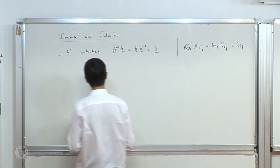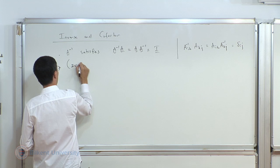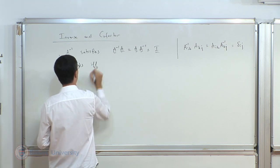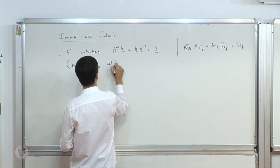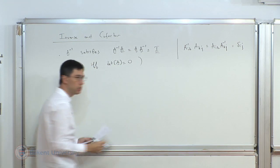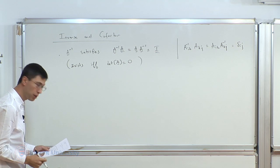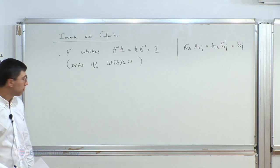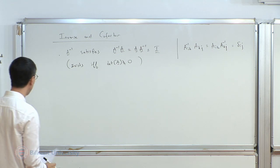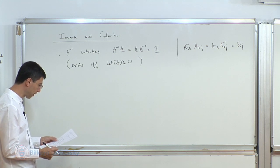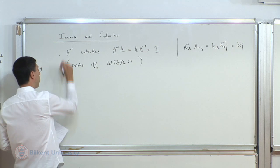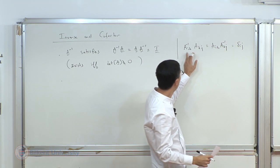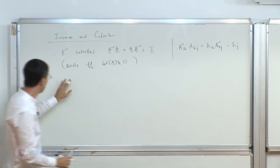Let me remind you how to calculate the inverse, since you might need it. The idea is: first calculate the cofactor, which has an explicit and neat expression, and then A inverse comes from that. To calculate the cofactor matrix, you place plus and minus signs on the entries, then calculate the determinants of the minors, and multiply by the sign. For instance, for the entry at position (1,2), the minor determinant times its sign gives minus 15.